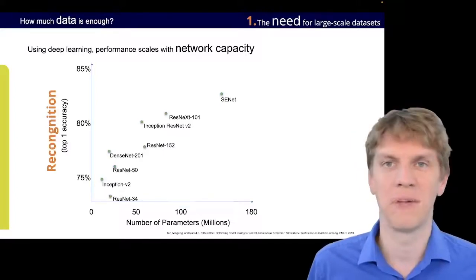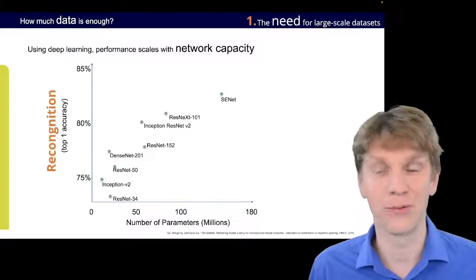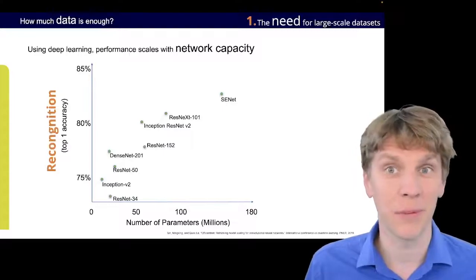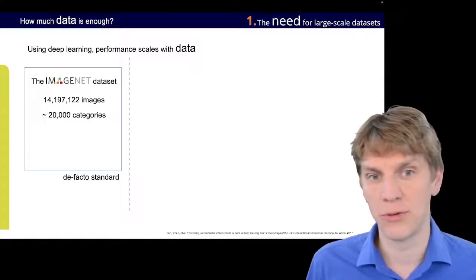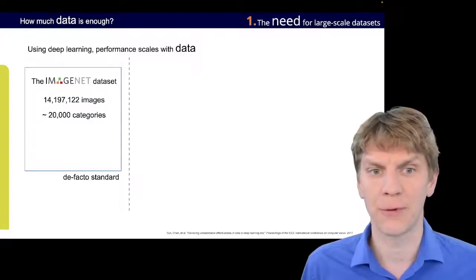And, of course, network capacity is, at least for backend solutions nowadays, not a big problem anymore. Now, the question is, does using deep learning performance also scale with data?